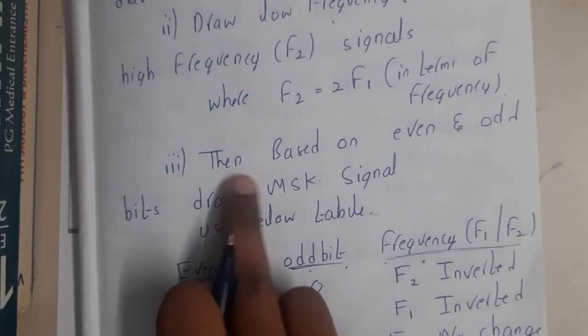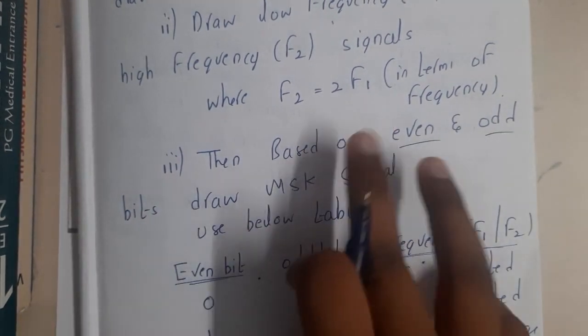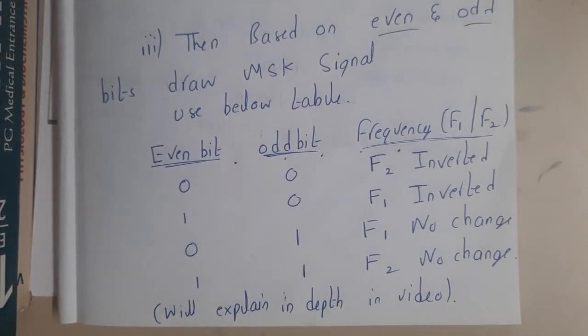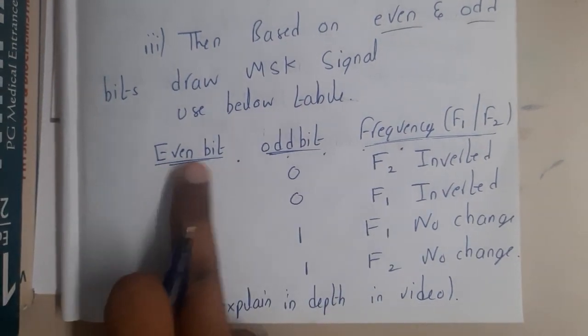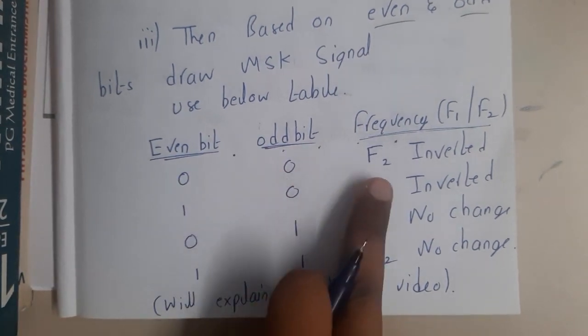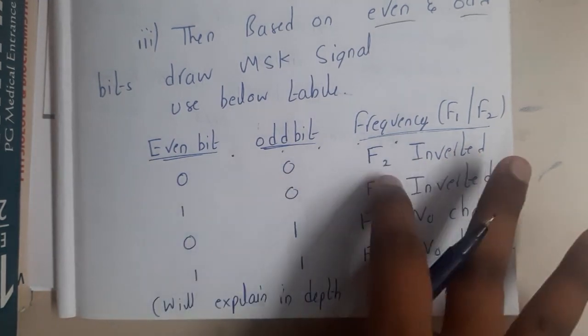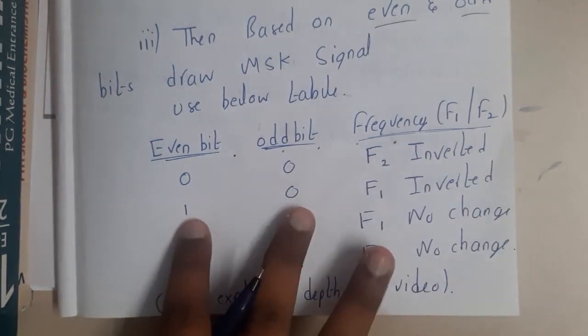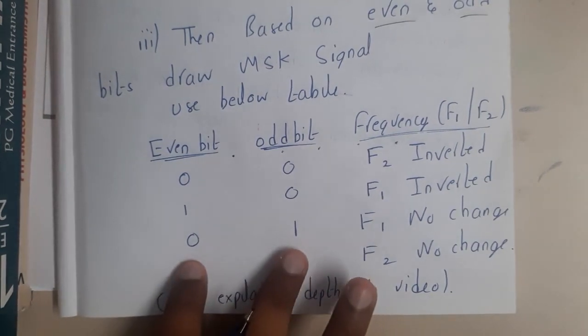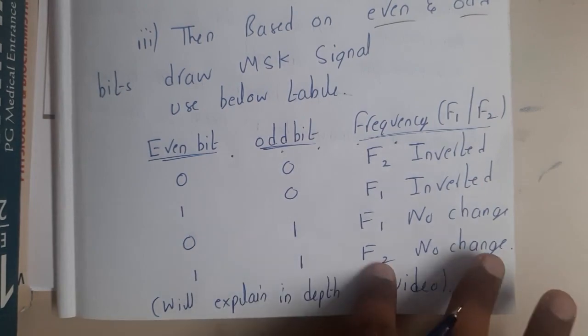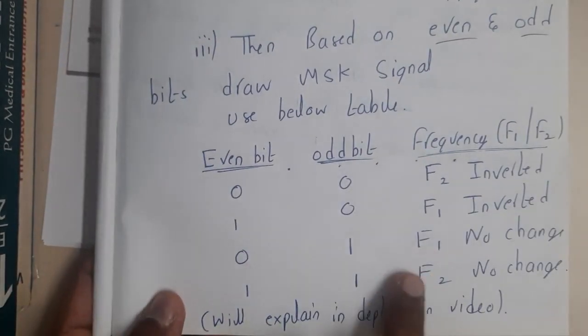Once that is done, based on the even and odd bits we apply the following operations — similar to AND/OR operations. If even bit and odd bit are both zero: invert f2. If one-zero: flip f1. If zero-one: draw f1 with no change. If one-one: draw f2 with no change.